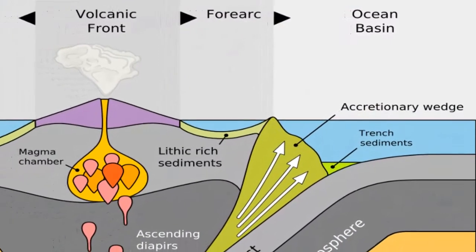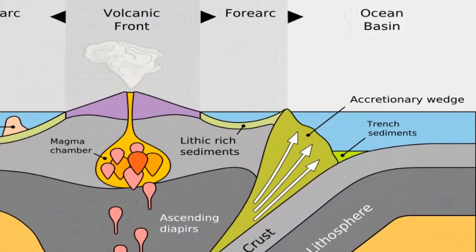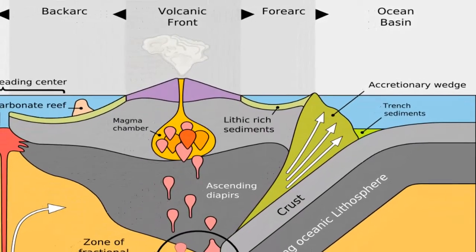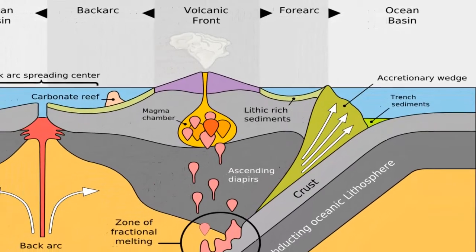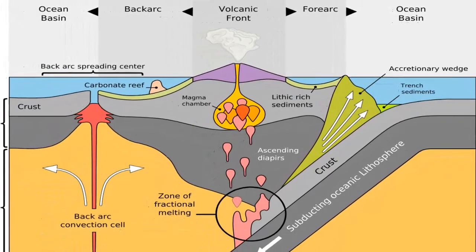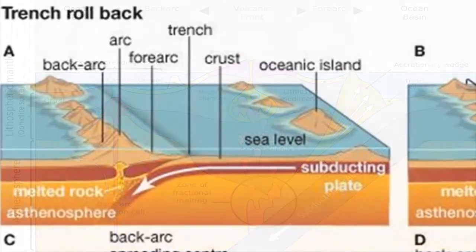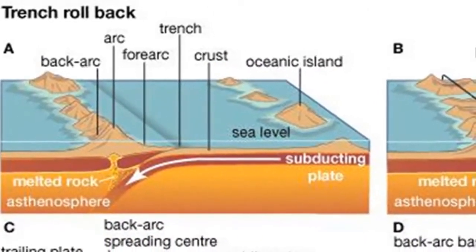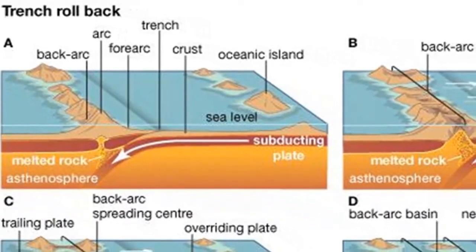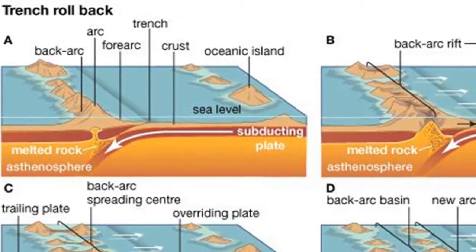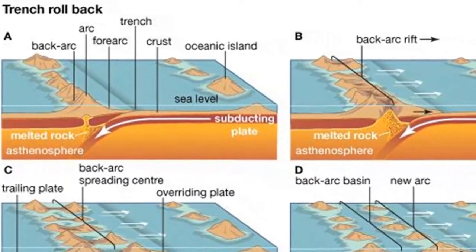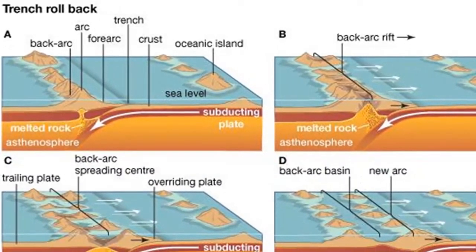2.3 Dynamics at Subduction Zones: Back arc spreading at convergent margins. Because subduction zones form where two plates are converging, it is natural to assume that large compressional forces are at work to deform the plate margins. Indeed, this is the case along many convergent plate boundaries. However, convergent margins are not always regions dominated by compressional forces.